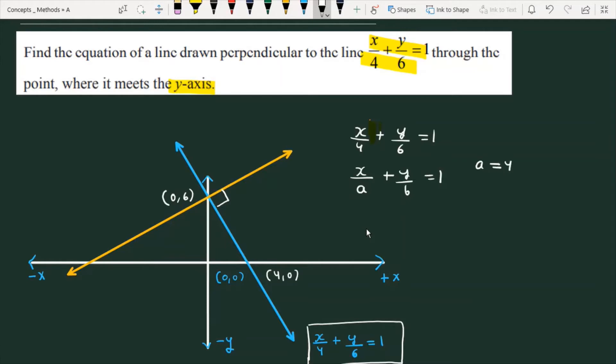When we compare with intercept form, the value of b is the intercept on the y-axis, and the value of a is the intercept on the x-axis.